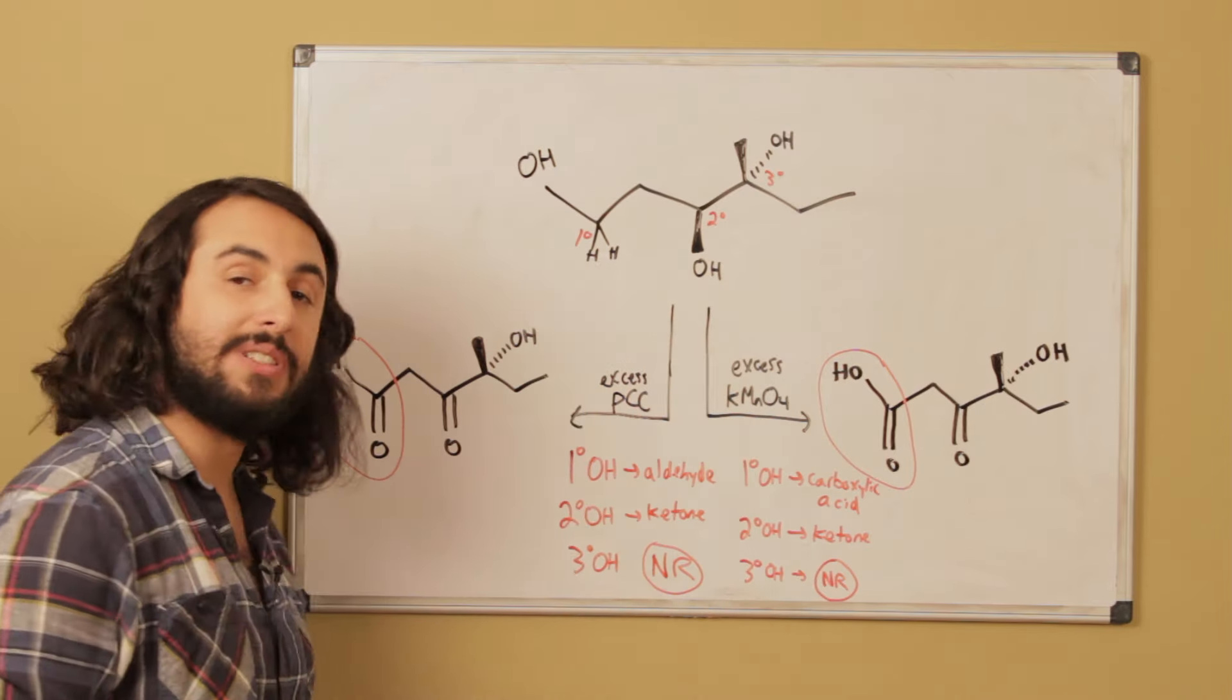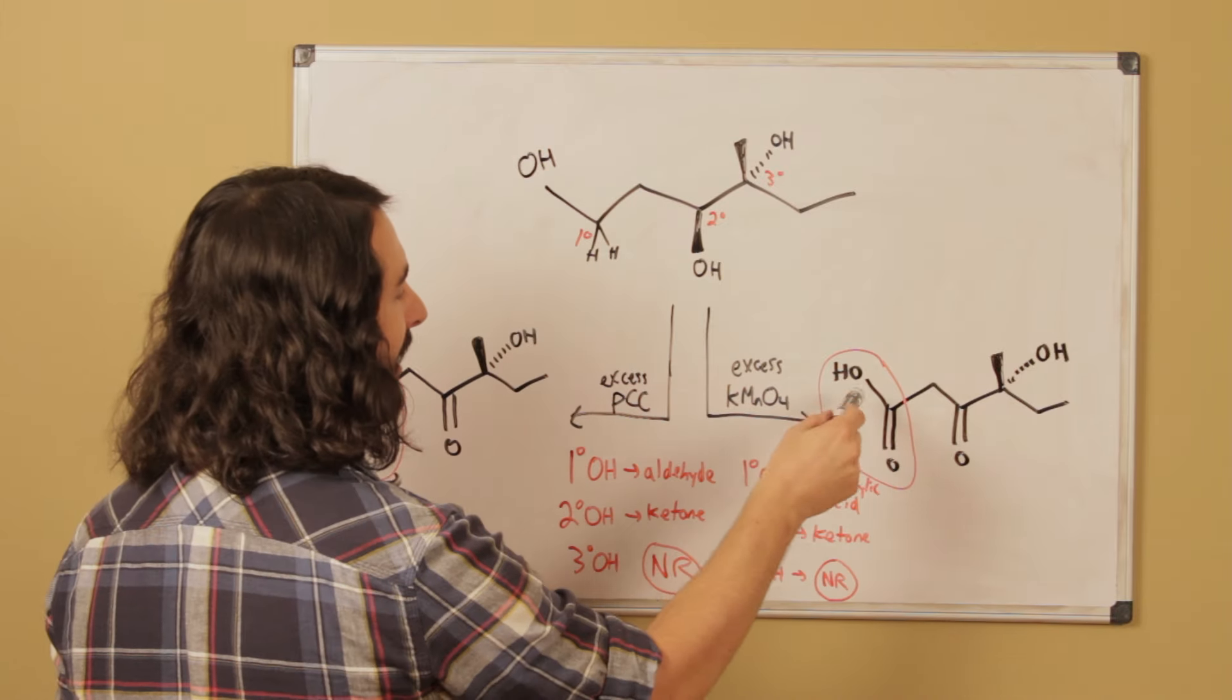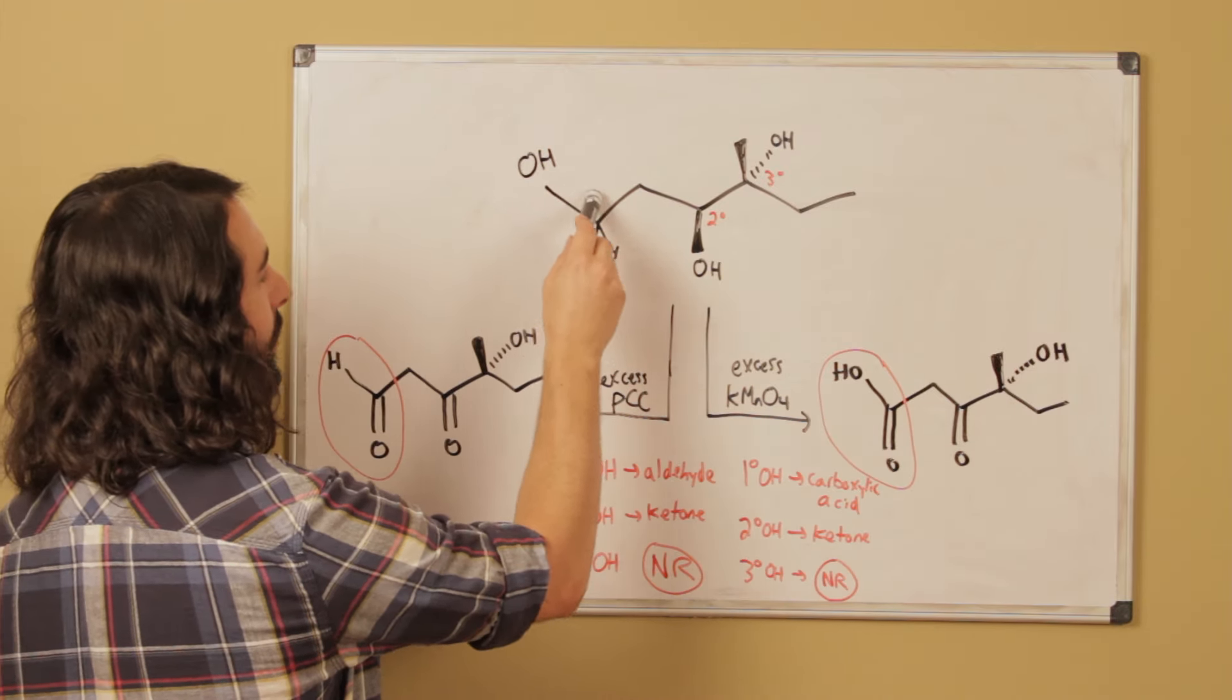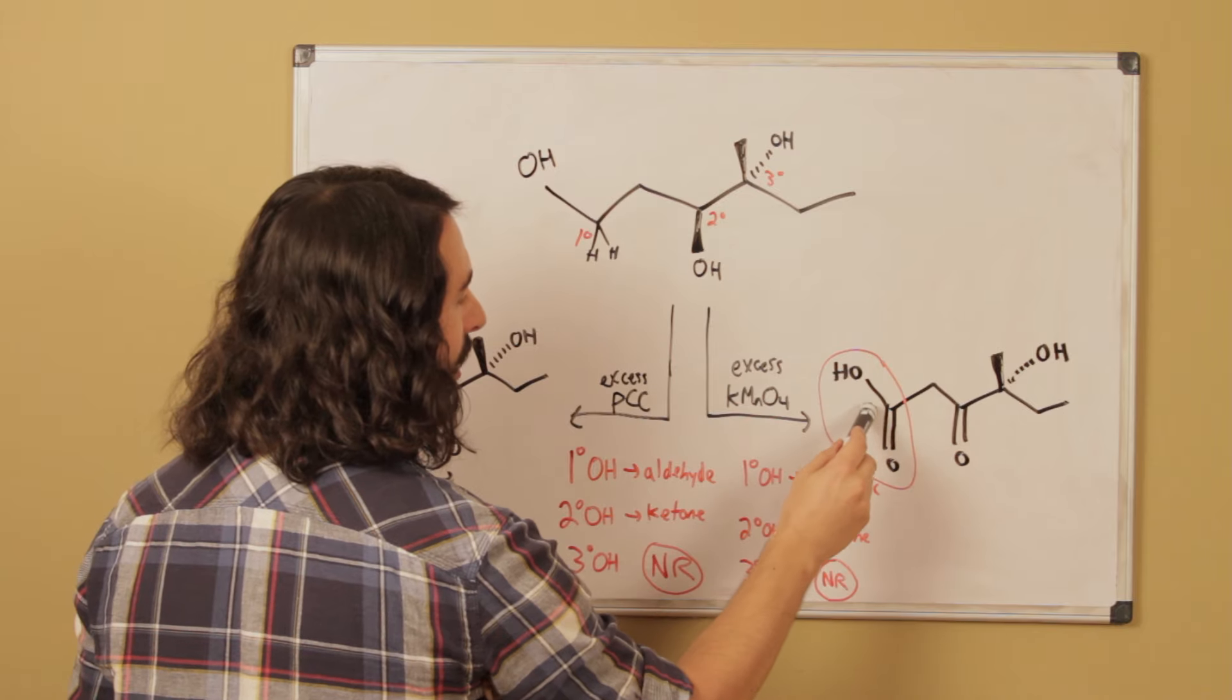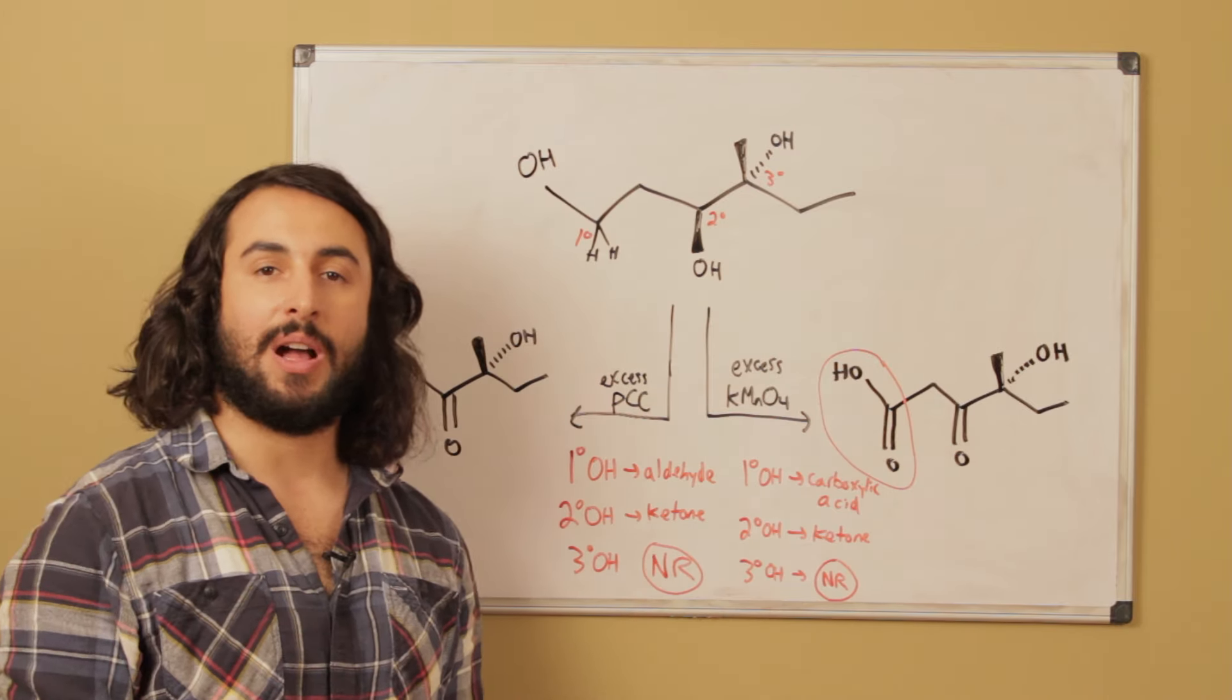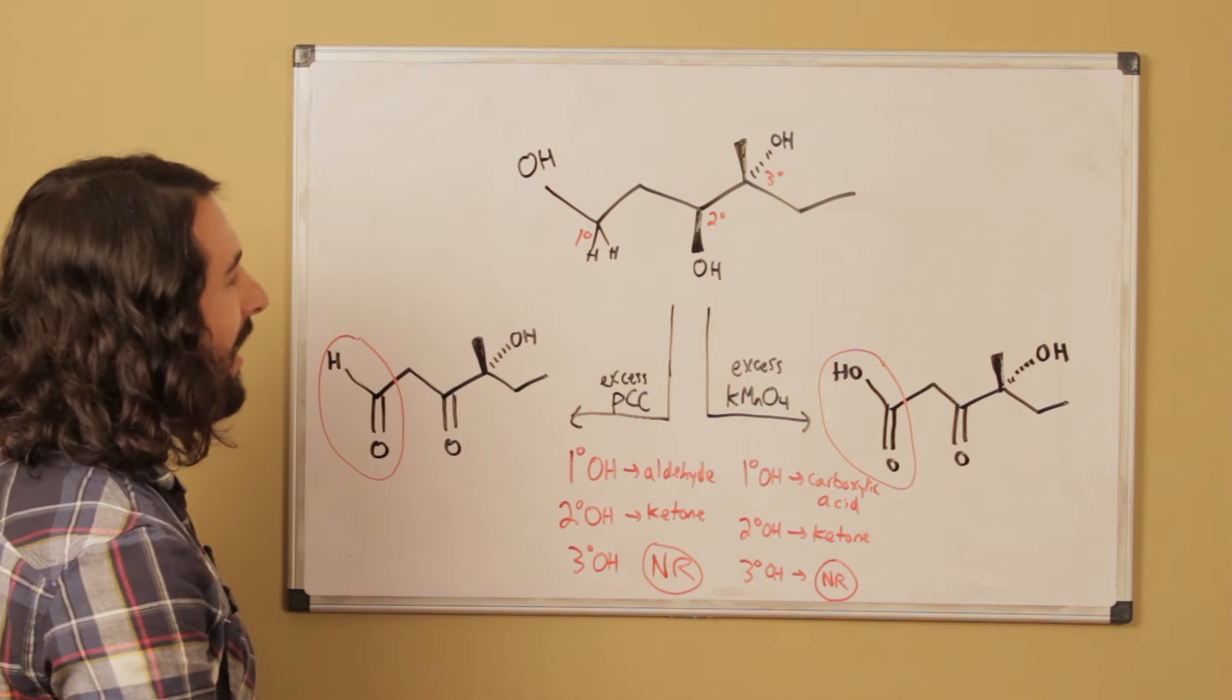And that's because in a primary position there are two hydrogen atoms here, and so KMNO4 is able to replace both of those carbon-hydrogen bonds with carbon-oxygen bonds. So over here there's one carbon-oxygen bond, now there are three carbon-oxygen bonds, and that's the maximum oxidative capacity at that position.